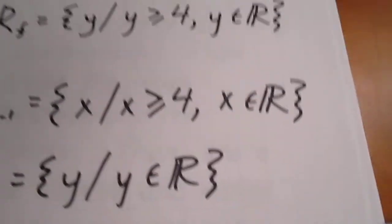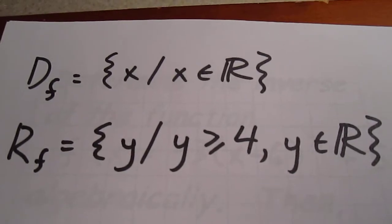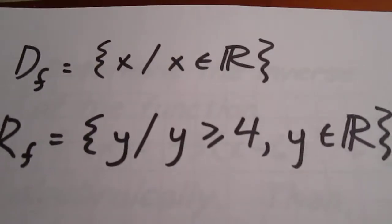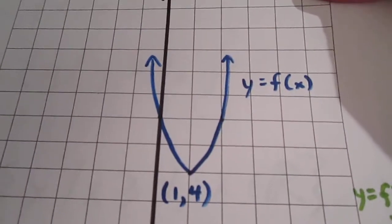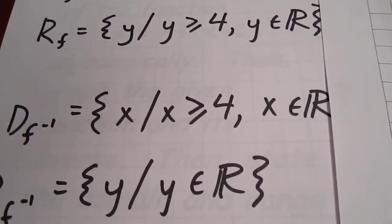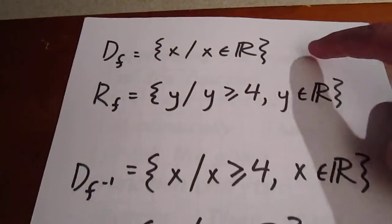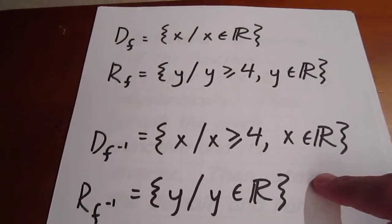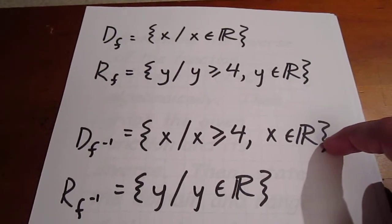We then proceed to the last page, and we see that the domain of the original is x element of the reals, and the range is y greater than or equal to 4, as indicated on that blue curve. And the domain of the inverse is x greater than or equal to 4, and the range of the inverse is y element of the reals, as we see here. And we note again that the domain of the original function should correspond exactly to the range of the inverse, and the range of the original function should correspond exactly to the domain of the inverse.